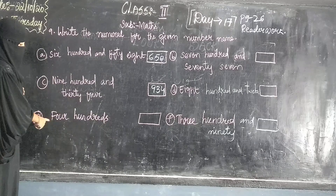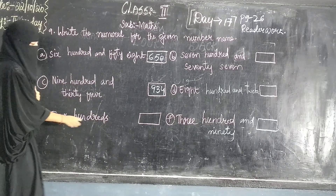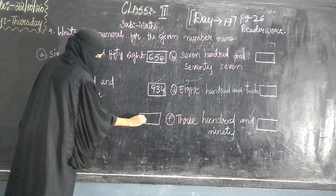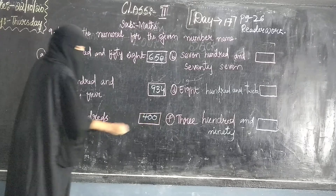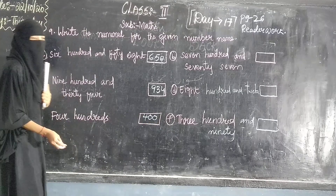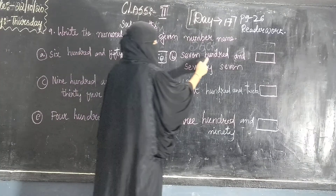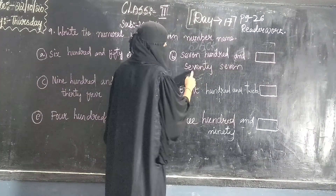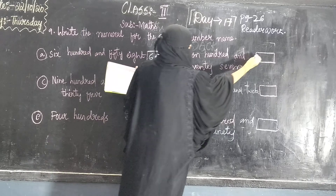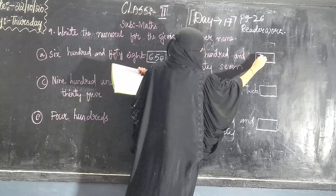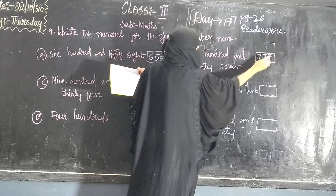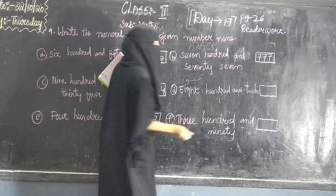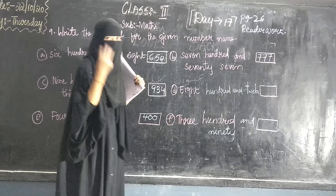Four hundreds. Four double zero, that is four hundreds. Next, seven hundred and seventy seven. Seven hundred and seventy seven — hundreds ki teen digits okay.